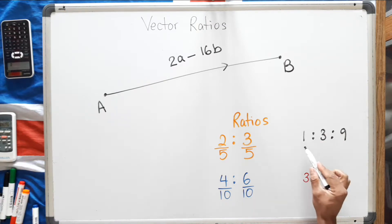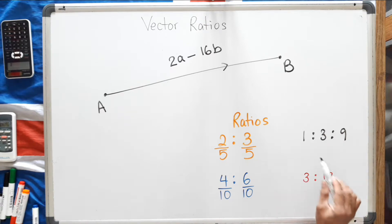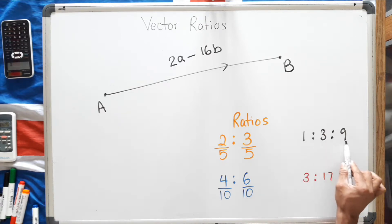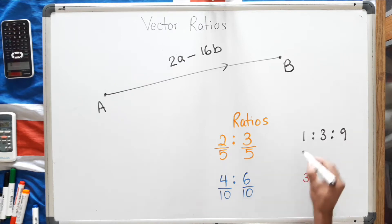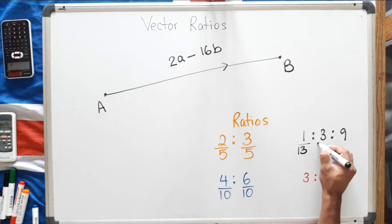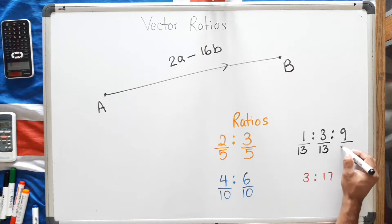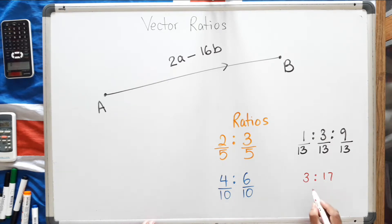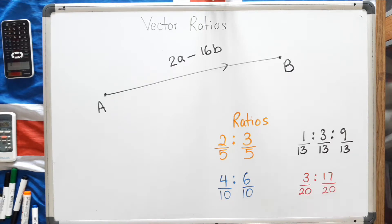Let's try the black one — the ratio 1 to 3 to 9. Add up all the numbers: 1 plus 3 is 4, 4 plus 9 is 13. So this really means 1 thirteenth, 3 thirteenths, and 9 thirteenths. Let's try the red one. If you see the ratio 3 to 17, 3 plus 17 is 20, so this really means 3 twentieths and 17 twentieths.